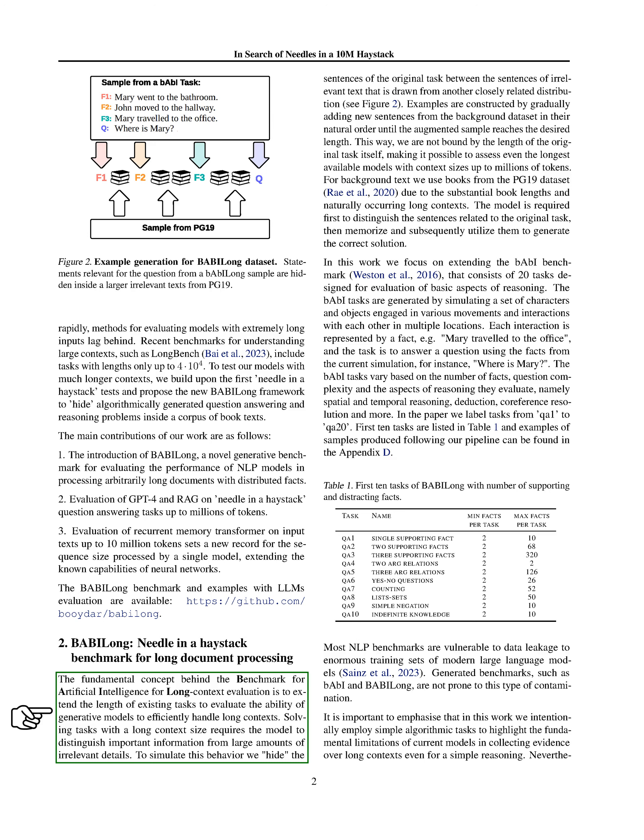The essence of the Bobby Long benchmark is to extend the length of tasks to test generative models' efficiency in handling long contexts. This involves embedding the sentences of the original task within a mass of irrelevant text, gradually increasing the sample's length to the desired size. For the background text, we use books from the PG-19 dataset, which are characterized by their substantial length and naturally occurring long contexts. The model's task is to identify, memorize, and use the relevant sentences to generate the correct solution.